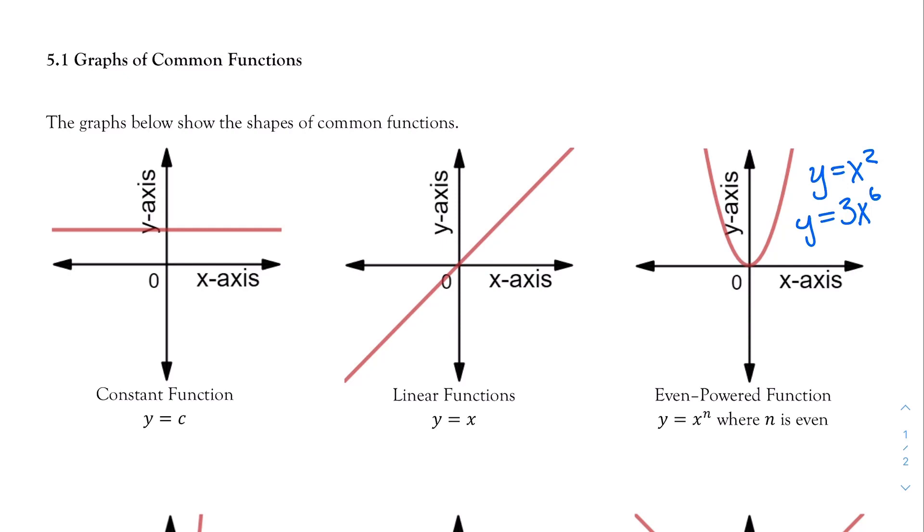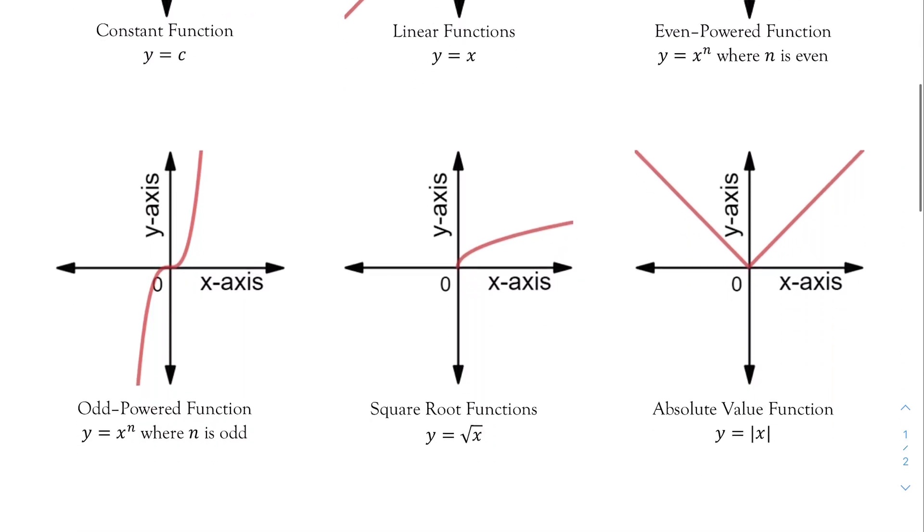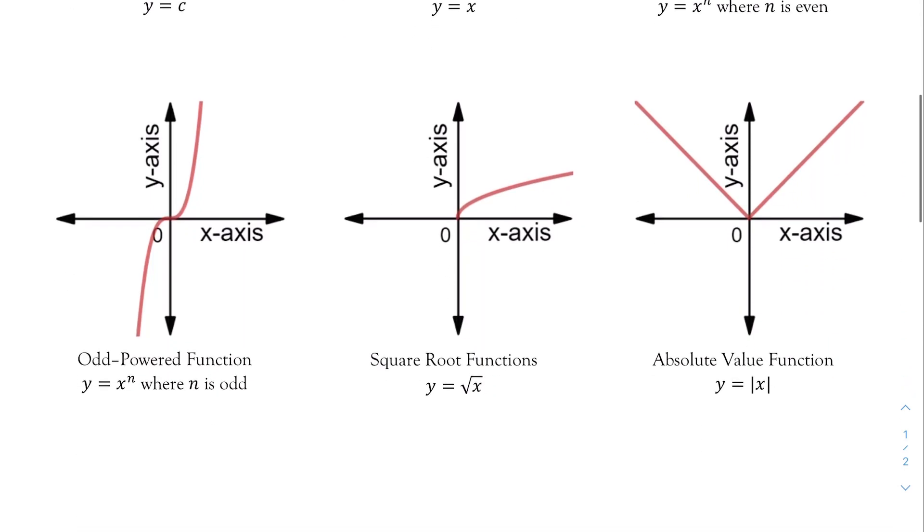If I move down to the second row, I have the odd powered function. Y is equal to x to the n, where n is an odd number. For example, y is equal to x cubed, y is equal to 7x to the fifth power. These are odd powered functions.